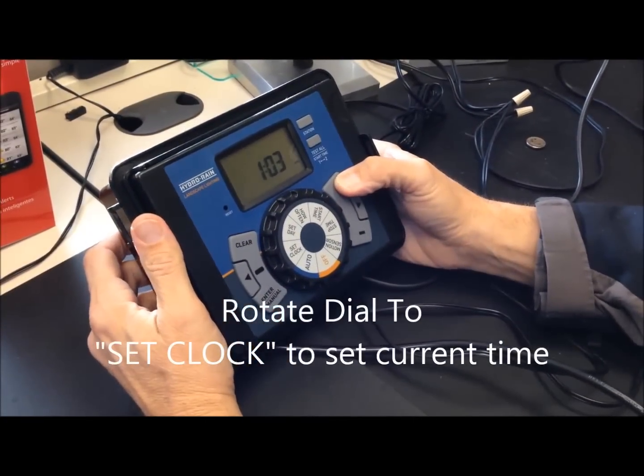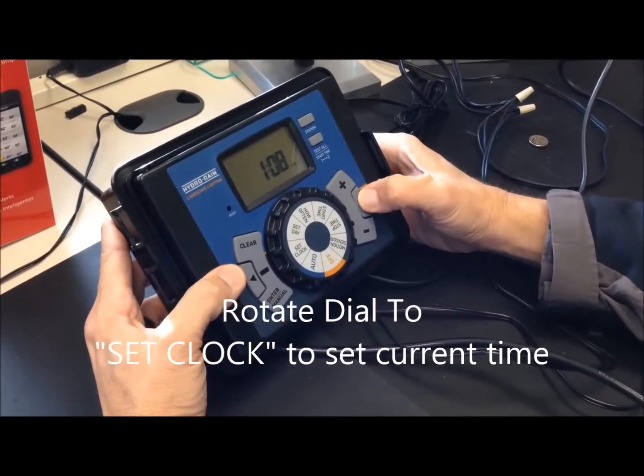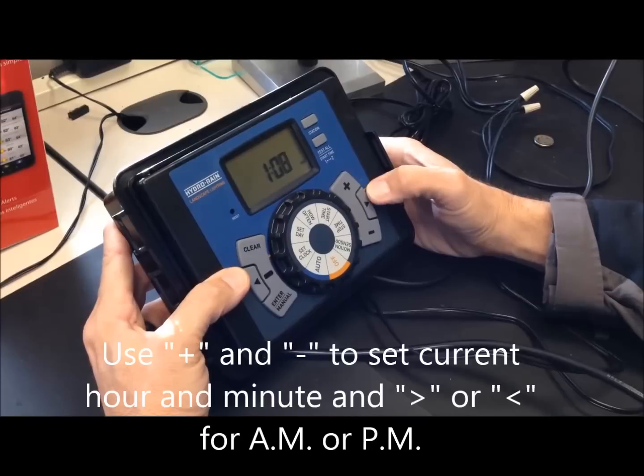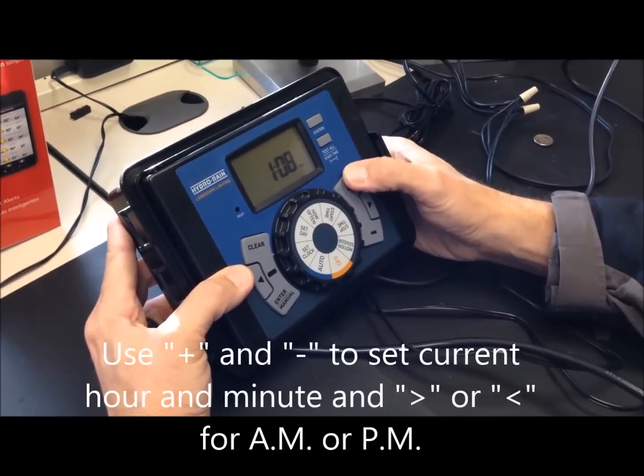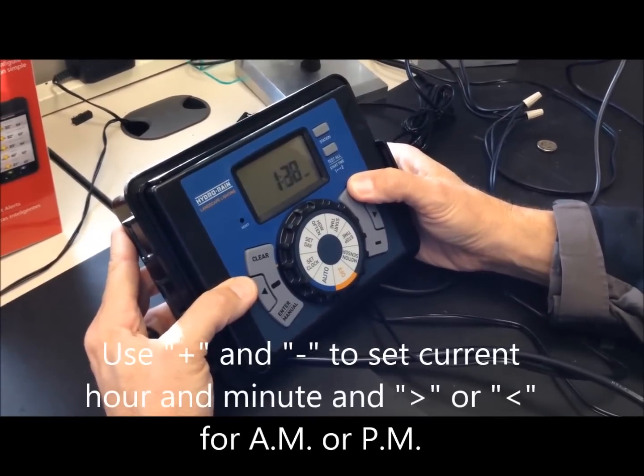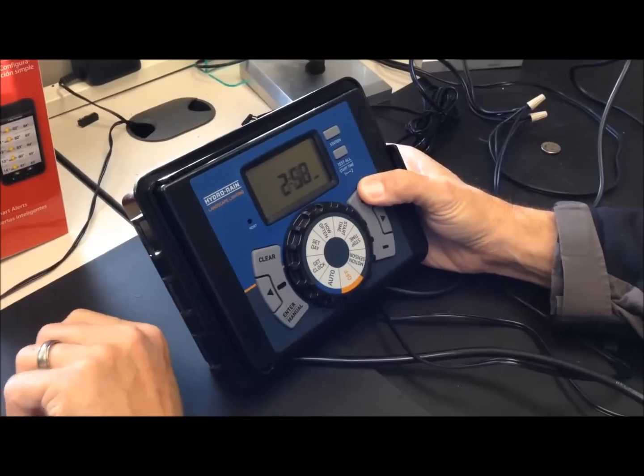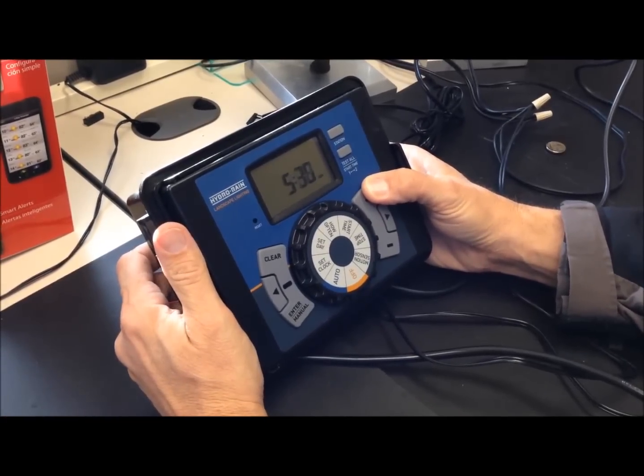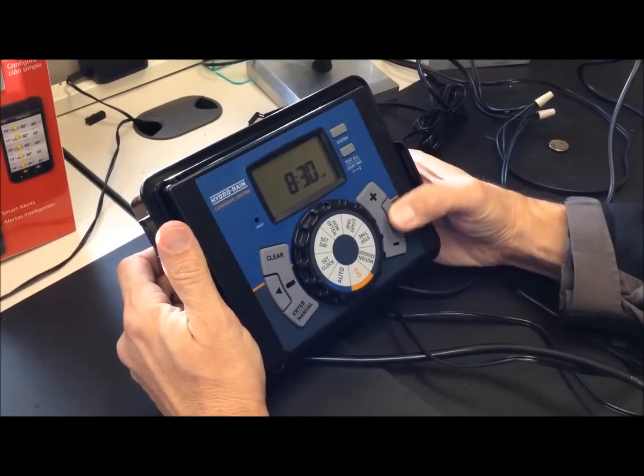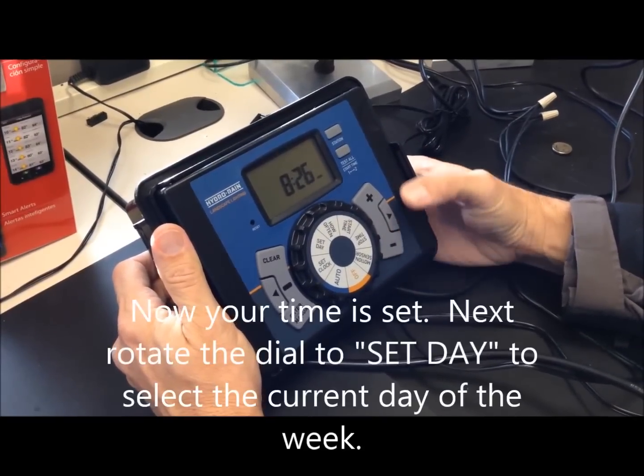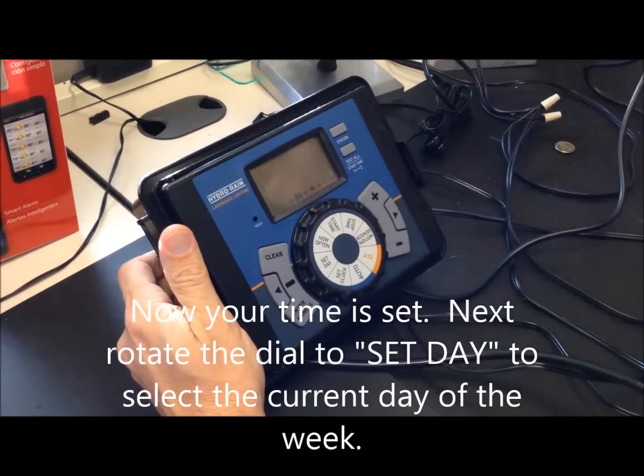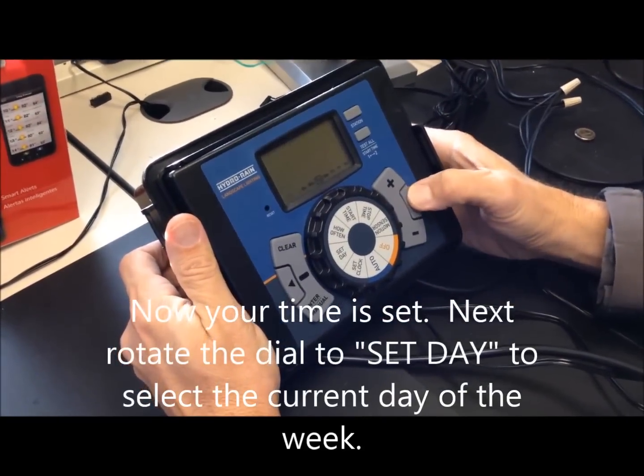Just use your plus or minus, and the left and right arrows will change from AM to PM. So we're going to go to 8:26. Then you just go to set your day. Today is Wednesday.